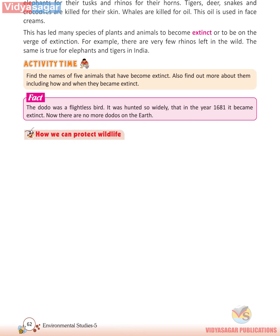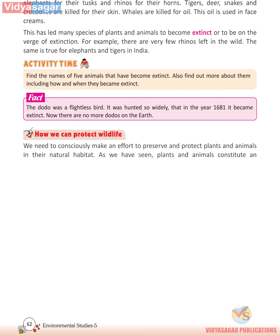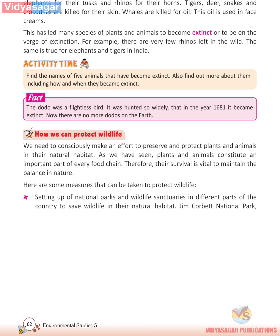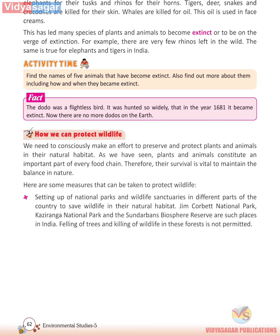How can we protect wildlife? We need to consciously make an effort to preserve and protect plants and animals in their natural habitat. Plants and animals constitute an important part of every food chain, and their survival is vital to maintain the balance in nature. Measures include setting up national parks and wildlife sanctuaries in different parts of the country. Jim Corbett National Park, Kaziranga National Park and Sundarbans Biosphere Reserve are such places in India. Felling of trees and killing of wildlife in these forests is not permitted.